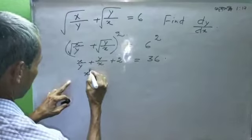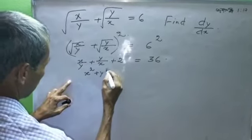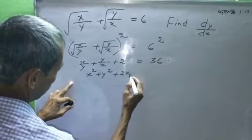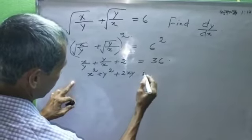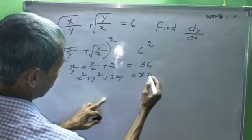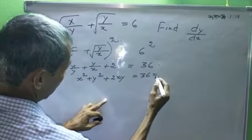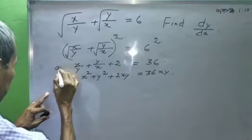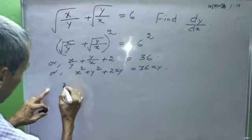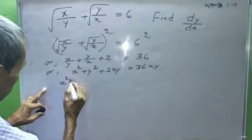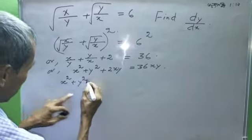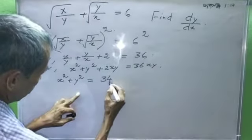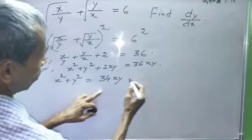X squared plus Y squared plus 2XY equals 36XY. Therefore, X squared plus Y squared equals 34XY.